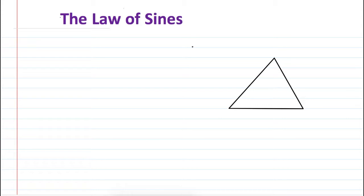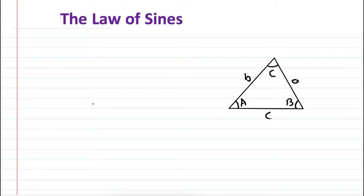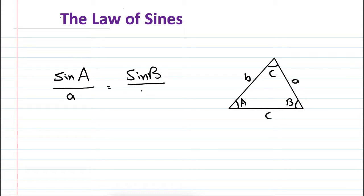The Law of Sines says that if we have a triangle, we label the sides b, a, and c. The angle opposite to each side uses the same letter in capital. So the angle opposite to side a is capital A, the angle opposite to side c is capital C, and the angle opposite to side b is capital B. The sides don't have to be equal. The Law of Sines then states that sin(A)/a = sin(B)/b = sin(C)/c.